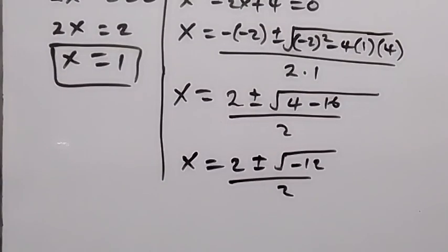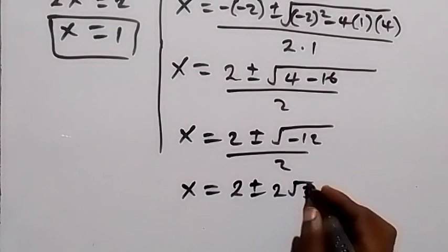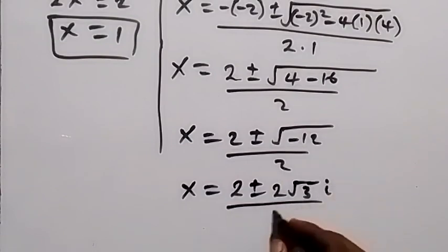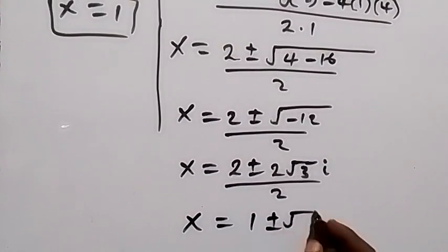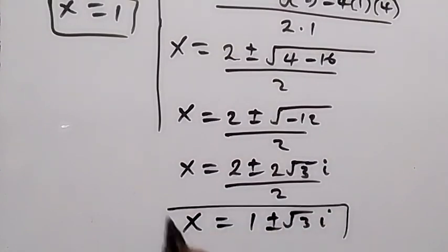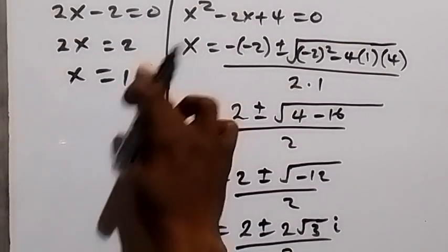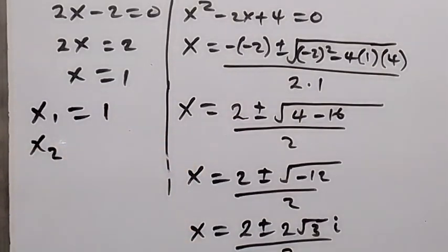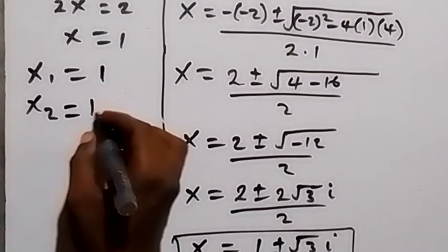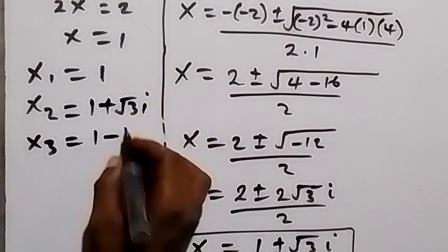So x equals 2 plus or minus square root of minus 12, over 2. Minus 12 can be written as 4 times 3 times minus 1, and square root of 4 is 2, square root of minus 1 is i. So x equals 2 plus or minus 2 root 3 i, over 2, which simplifies to x equals 1 plus or minus root 3 i. So our first three values are: x1 equals 1, x2 equals 1 plus root 3 i, and x3 equals 1 minus root 3 i.